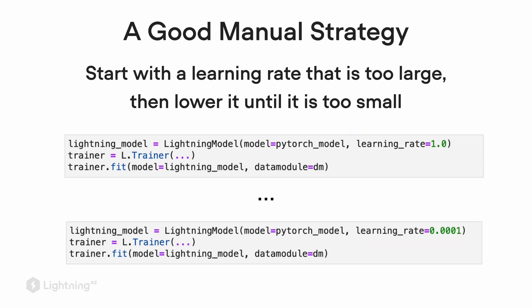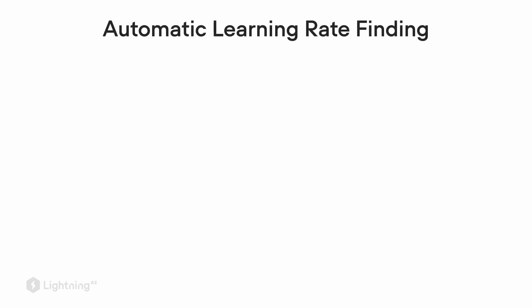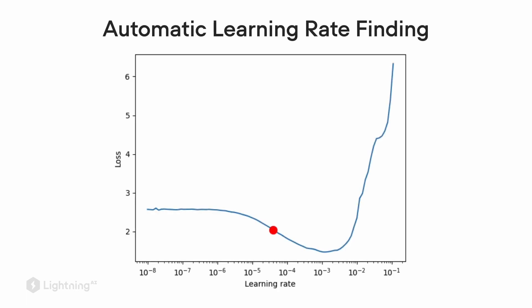However, running these experiments manually might be tedious. So there is also an automatic learning rate finding algorithm that Lightning implements. What you can see here is a plot of the losses on the y-axis against different learning rate values on the x-axis. The red dot here symbolizes the learning rate that the automatic learning rate finding algorithm found.